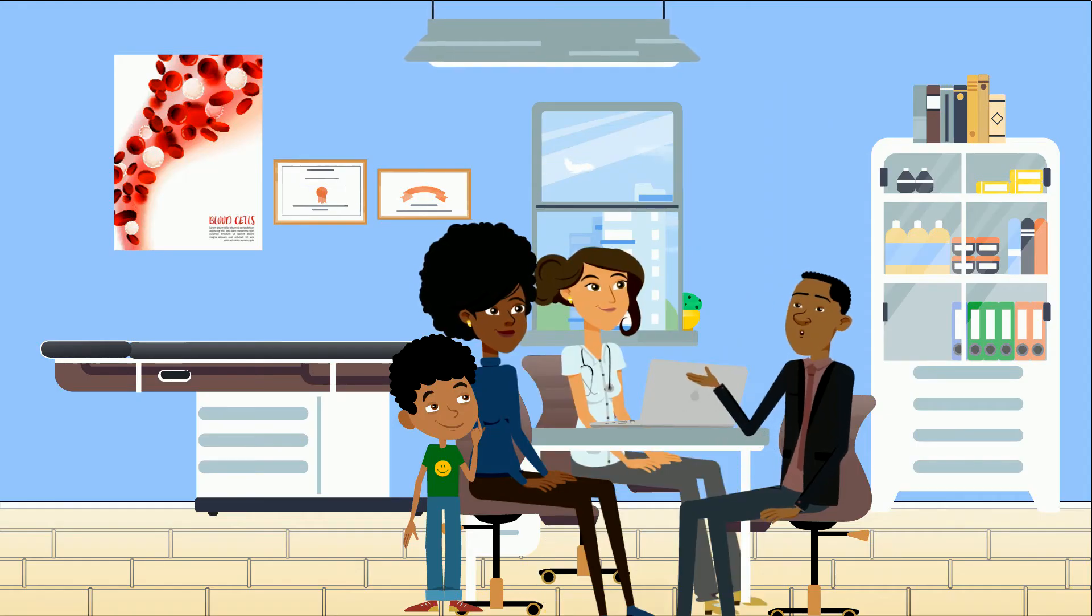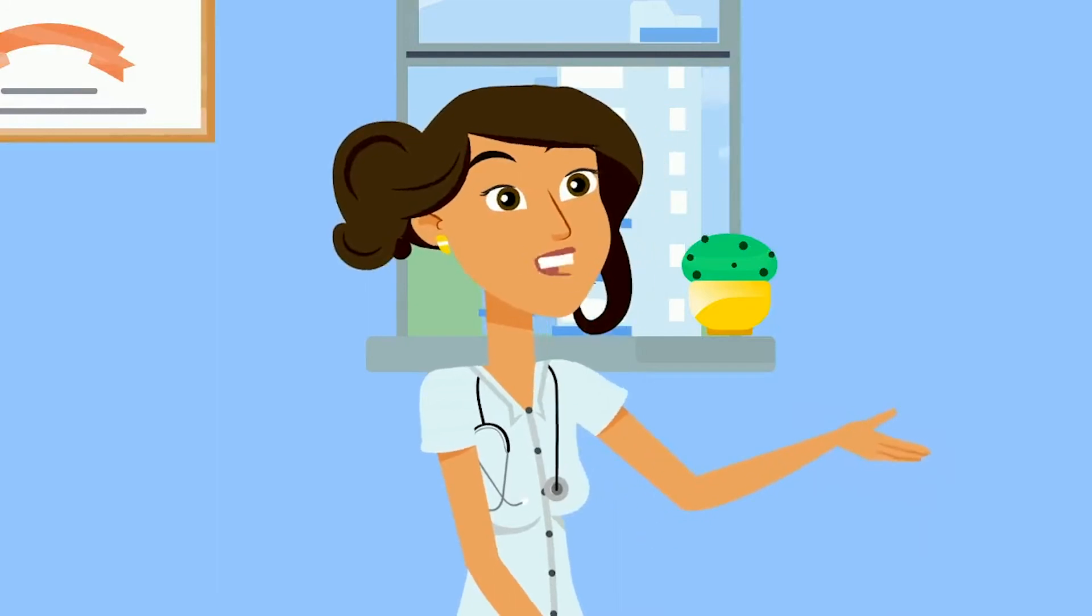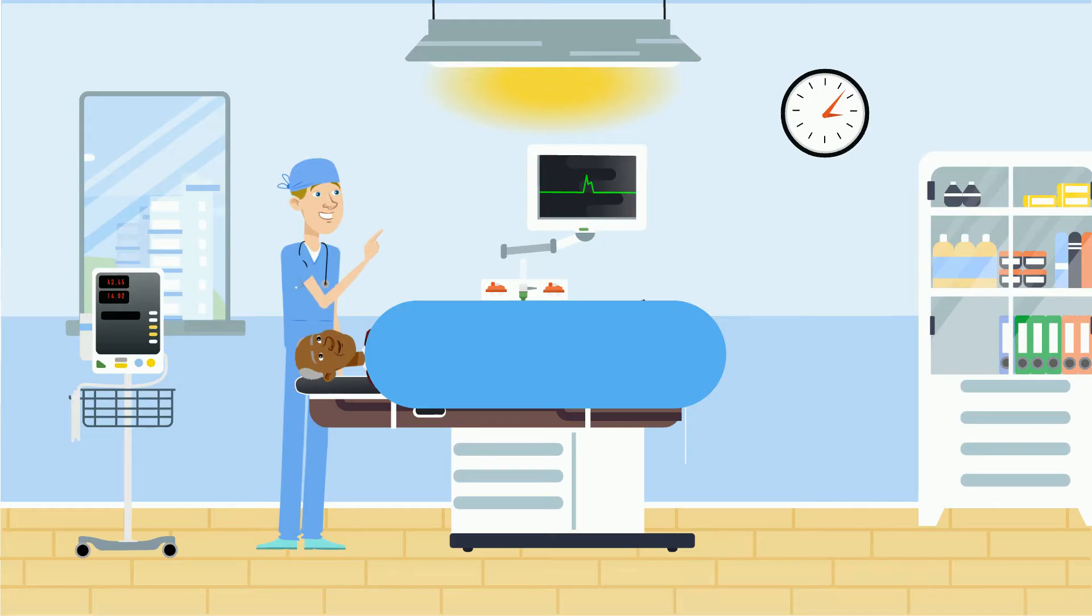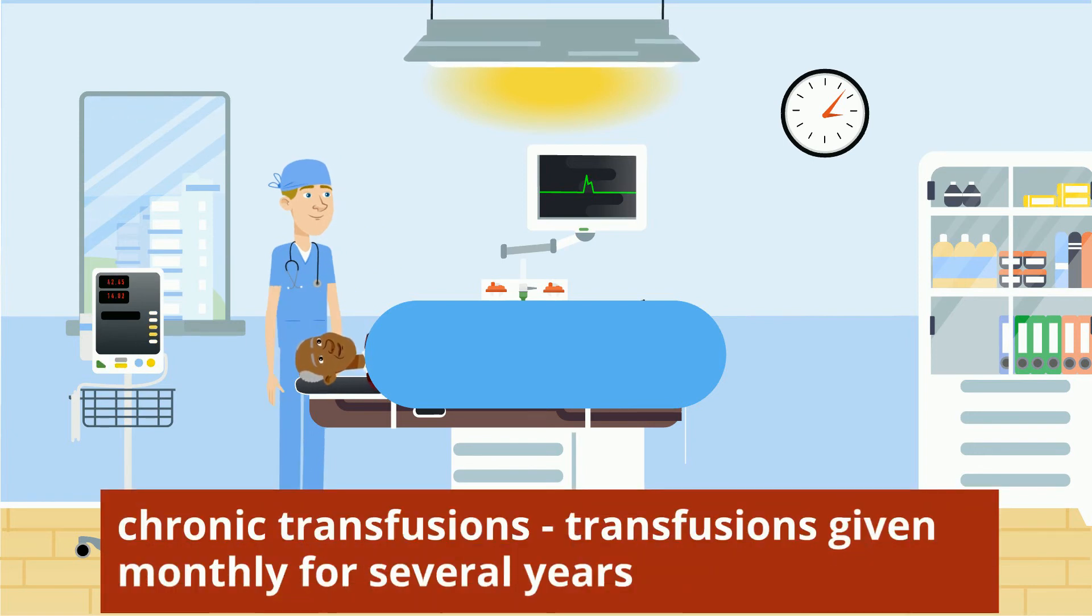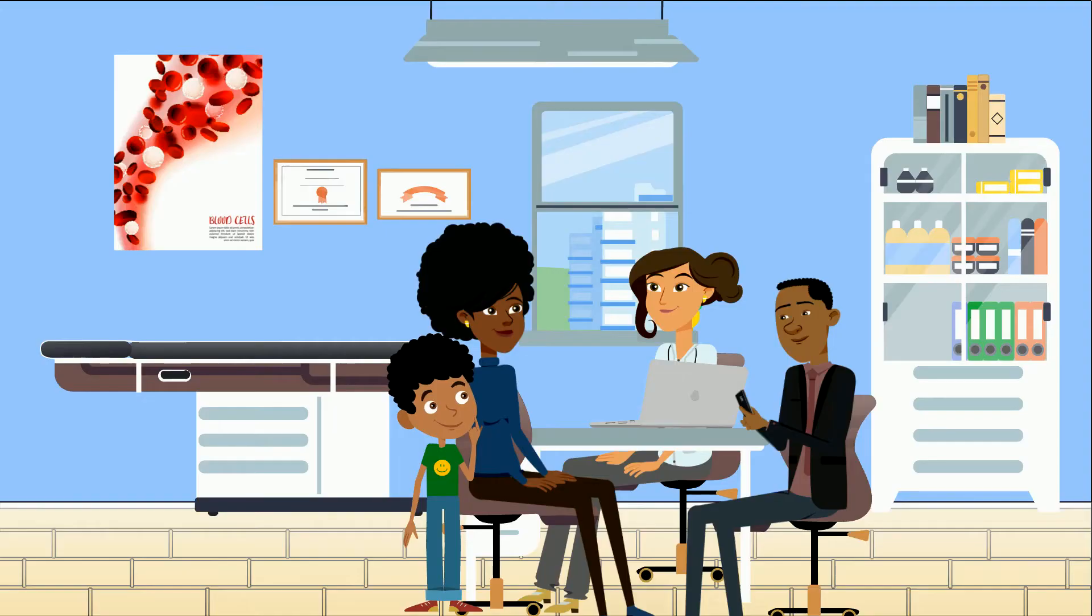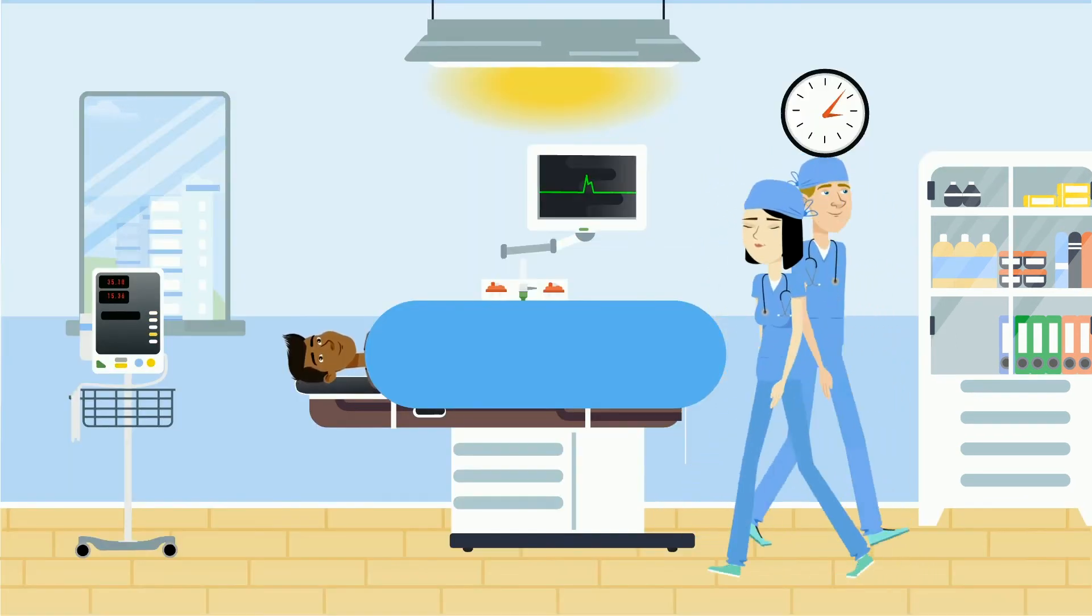How many blood transfusions does Marcus need? Right now, the best way to prevent another stroke is for Marcus to have a transfusion every three or four weeks for the rest of his life. This is called chronic transfusion, when someone gets transfusions on a regular schedule over several months or years. What we did in the hospital was called acute transfusion, giving blood to help with an urgent health concern like a stroke.